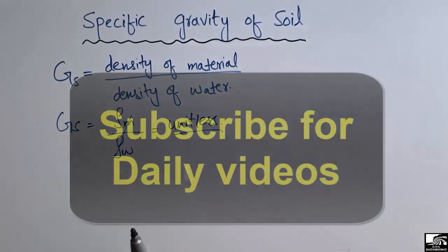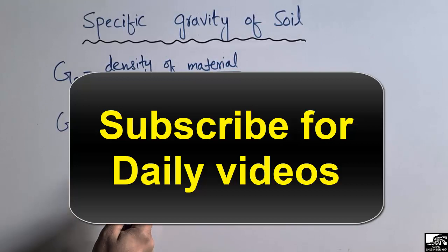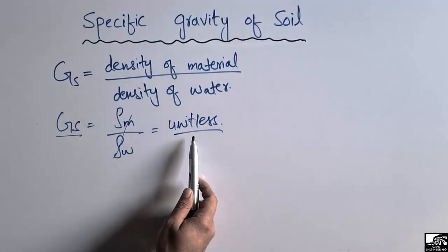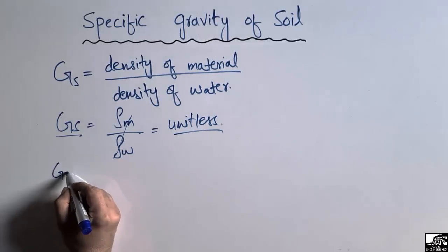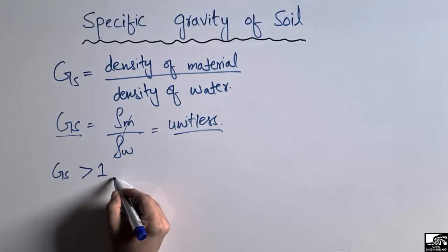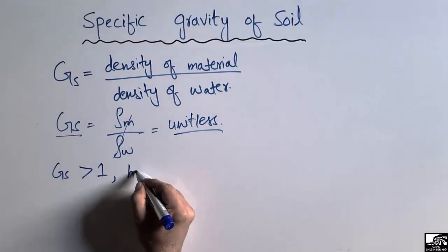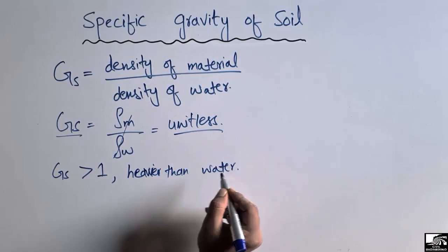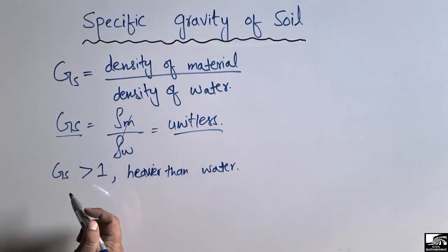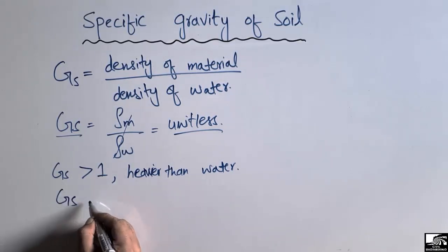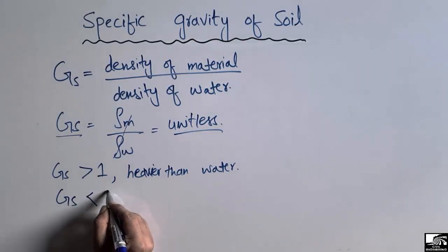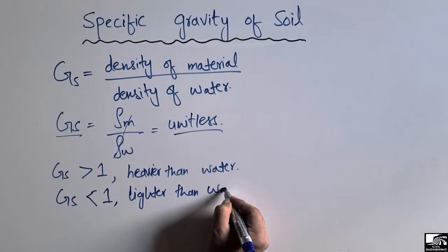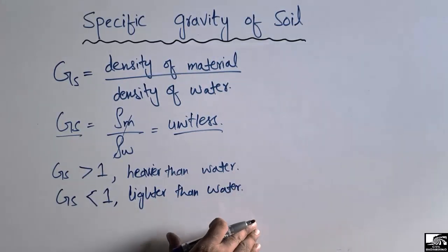Because specific gravity is the ratio of two densities — material density to the density of water — it has no unit. If the specific gravity of the soil is greater than one, it means the soil is heavier than water, and most soils have a specific gravity greater than one. If specific gravity is less than one, it means the soil is lighter than water.